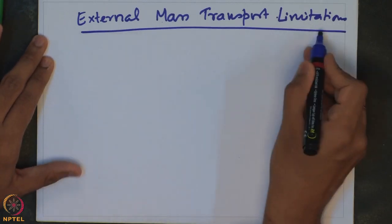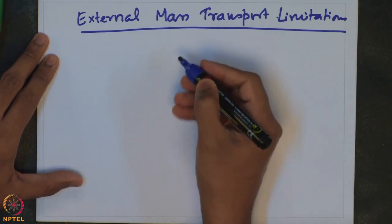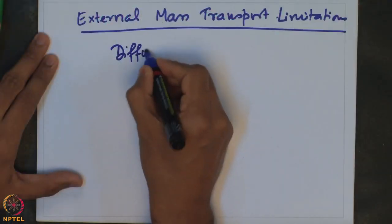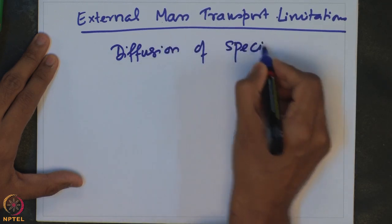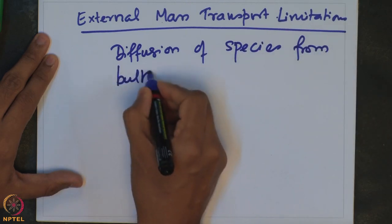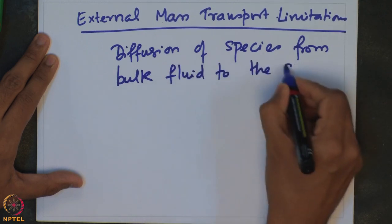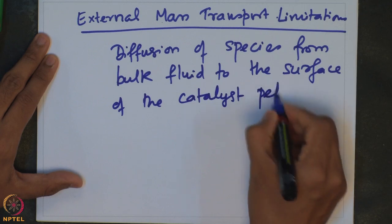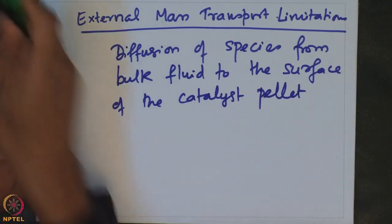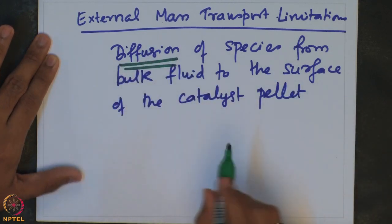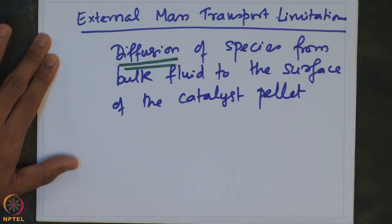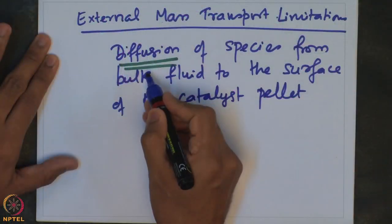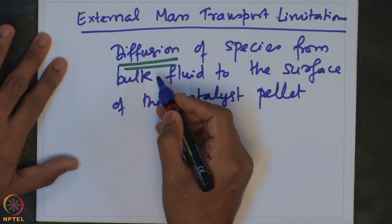We look at what is classically called external mass transport limitations. The external mass transport typically refers to the diffusion of species — mass transport due to diffusion of species from bulk fluid to the surface of the catalyst pellet. If diffusion of the species is slow, then it is clearly slower than the other rate processes such as the internal diffusion or the surface reaction, and then the external mass transport will control the overall rate at which the reaction can happen.